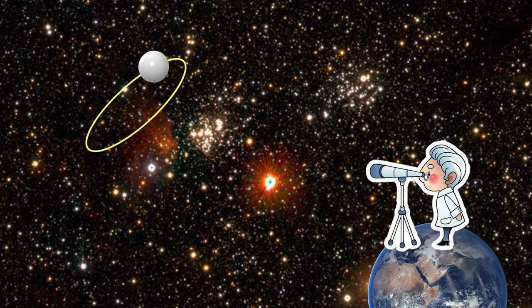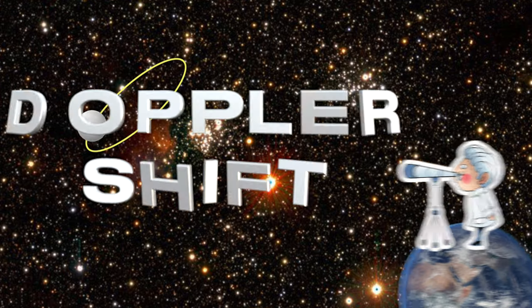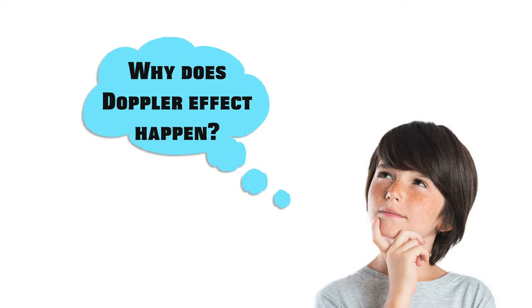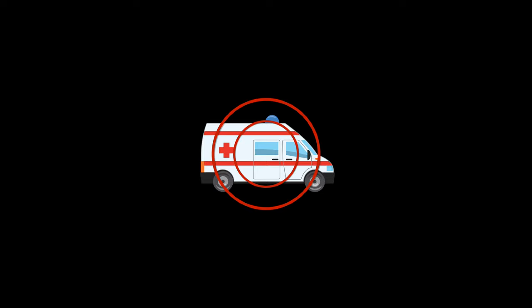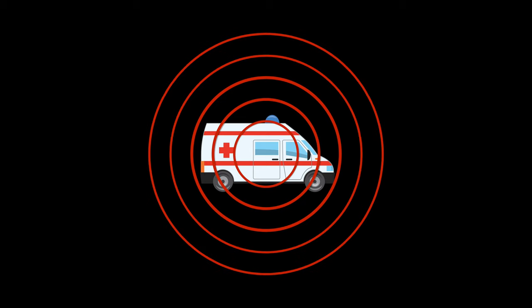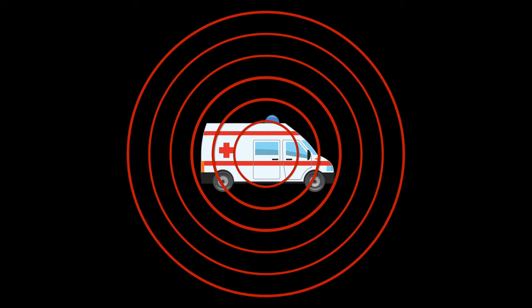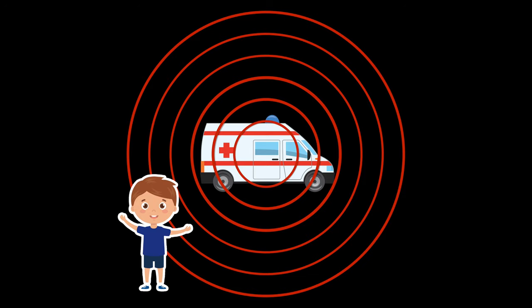This phenomenon is also called the Doppler shift. So why does the Doppler effect happen? Let's consider a stationary source that's emitting waves in all directions with a constant frequency. The shape of the wavefront coming from the source is described by a series of concentric, evenly spaced shells. Any person standing still near the source will encounter each wavefront with the same frequency that it was emitted.